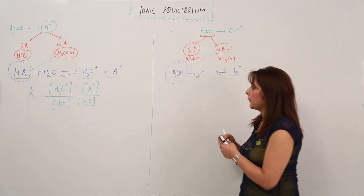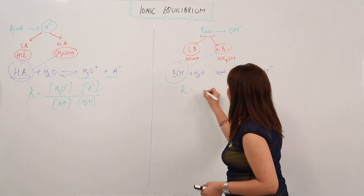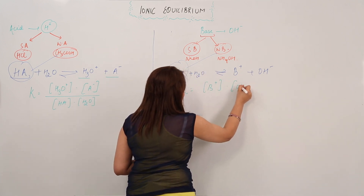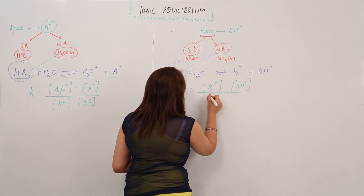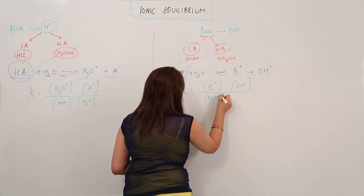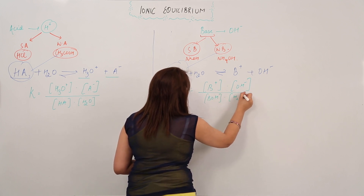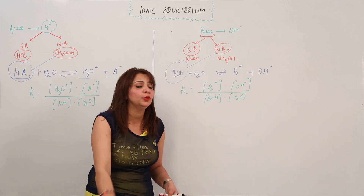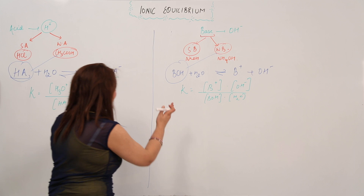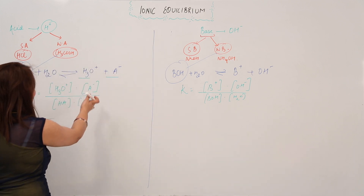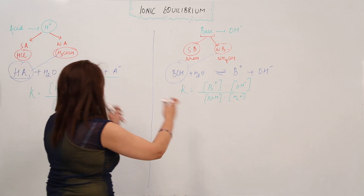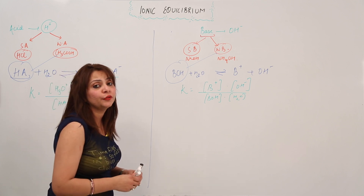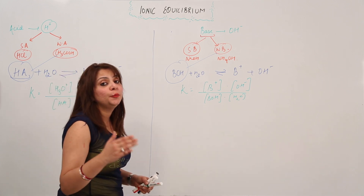Similarly, I am writing the expression for the base: the concentration of products divided by the concentration of reactants. If there exist any moles, you have to put them as a superscript. I have just written an expression for a weak acid and for a weak base in terms of the law of chemical equilibrium — that is, the equilibrium constant.